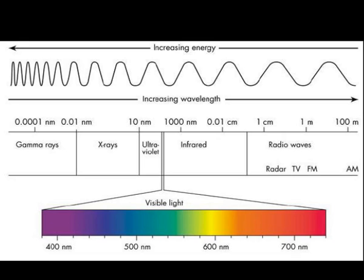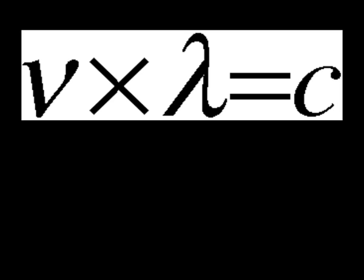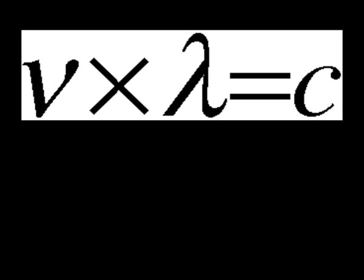There are mathematical relationships between energy, frequency, wavelength, and the speed of light. Here we see the equation frequency times wavelength equals the speed of light. Frequency is in the units called hertz, or cycles per second. Wavelength, which is signified by the Greek letter lambda, is in meters. And the speed of light is a constant, which is in meters per second.